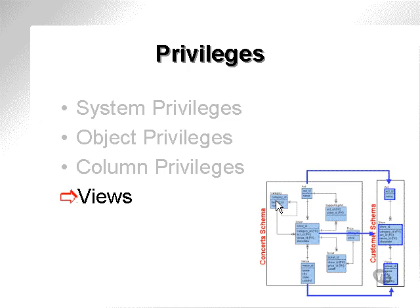Views can be used to do more or less the same thing that object privileges and column privileges can be used for, not quite in the same way. A view can be used to pick out certain columns within a table, and then that view can be used by the same user, or access can be granted to a different user. So a view would be more or less a combination of object and column privileges.